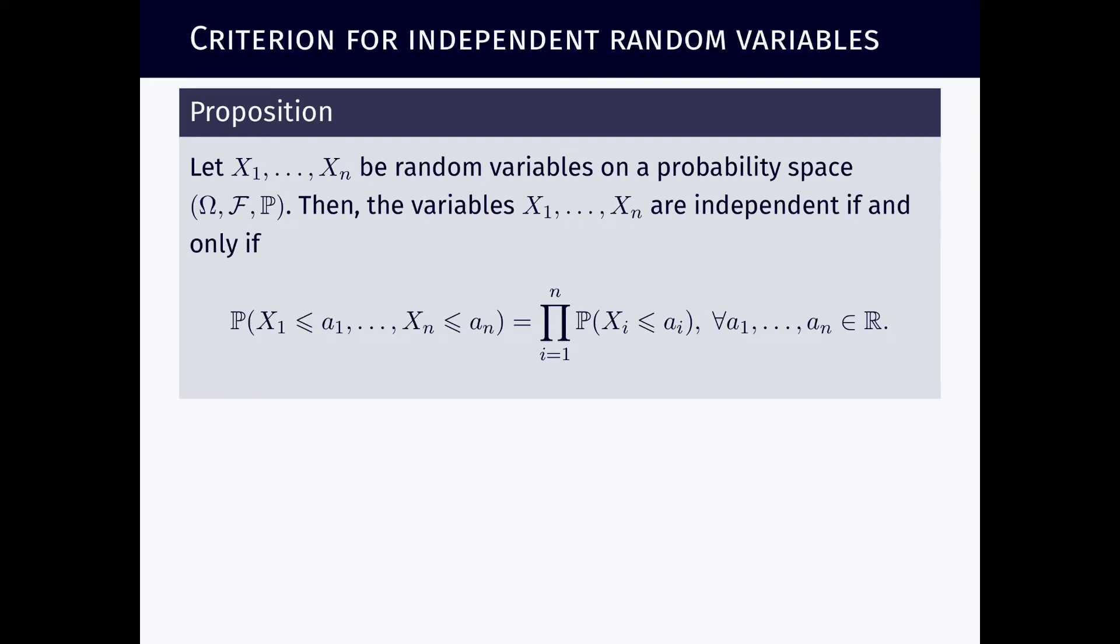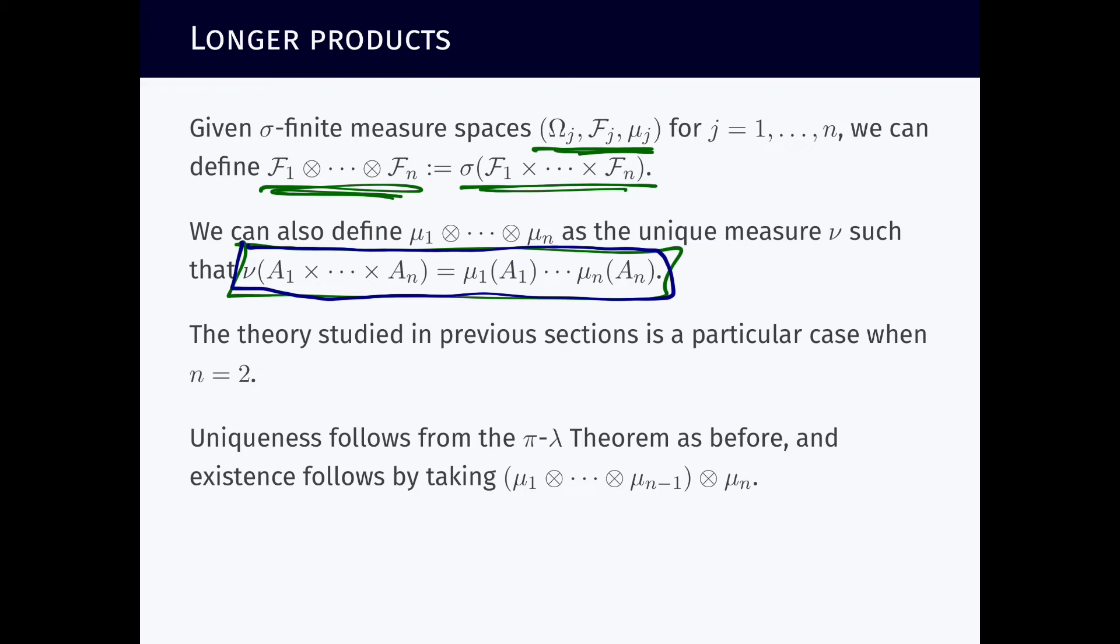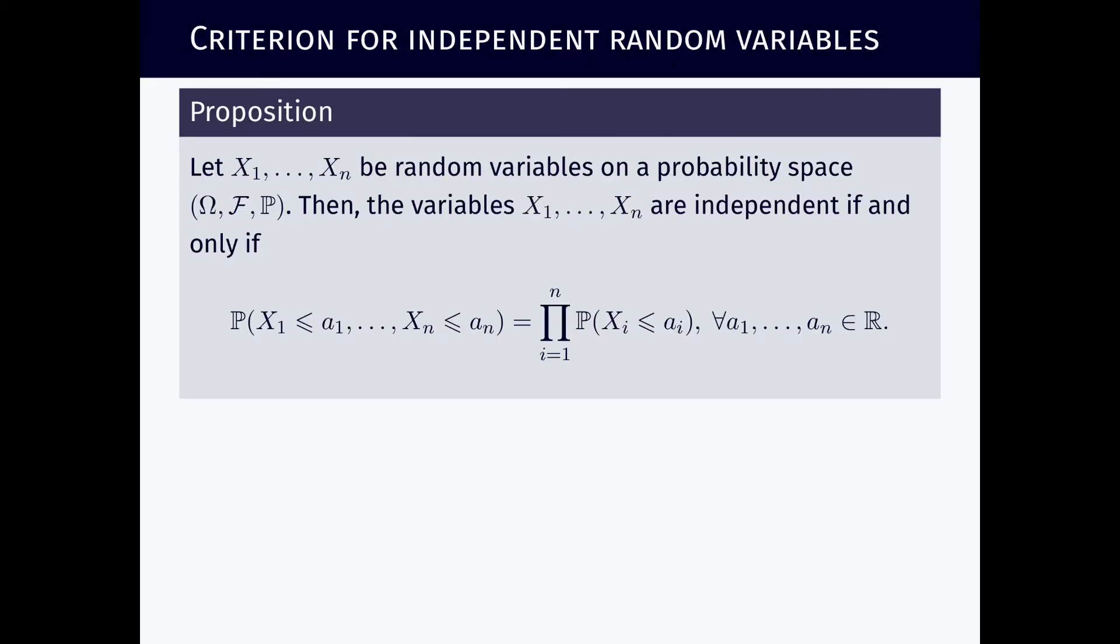I was hoping that this video lecture would have only one part, but I spent some time explaining the ideas of longer products of measures and relating independence of random variables to product measures in their distribution. So here's the last part of this last video lecture of this unit.